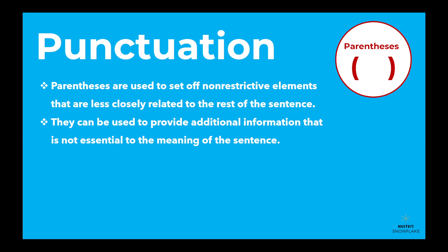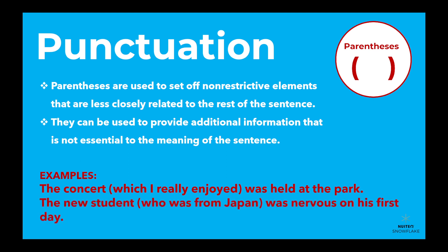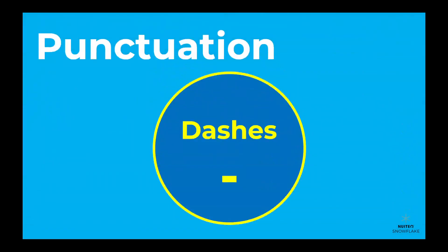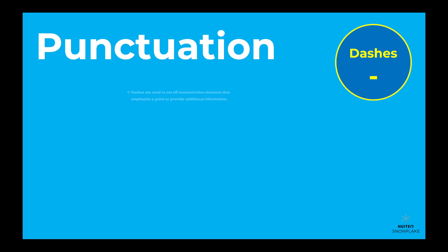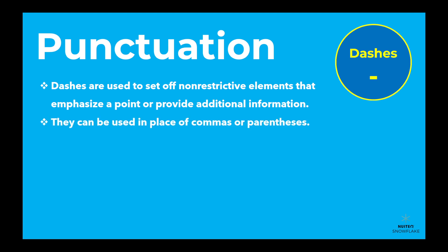For example: 'The concert (which I really enjoyed) was held at the park.' 'The new student (who was from Japan) was nervous on his first day.' Dashes are used to set off non-restrictive elements that emphasize a point or provide additional information. They can be used in place of commas or parentheses.